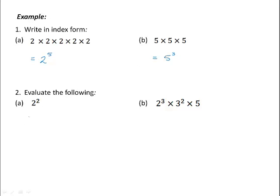If we want to evaluate a number in index form, we are really working out how many times the number is multiplied by itself. So for example, 2 squared is just 2 times 2, or 4. If we look at an example with several numbers raised to powers: 2 cubed is 2 times 2 times 2, 3 squared is 3 times 3, and then this is times by 5. So 2 cubed is 8, times 3 squared which is 9, times 5. Evaluating this gives 360.